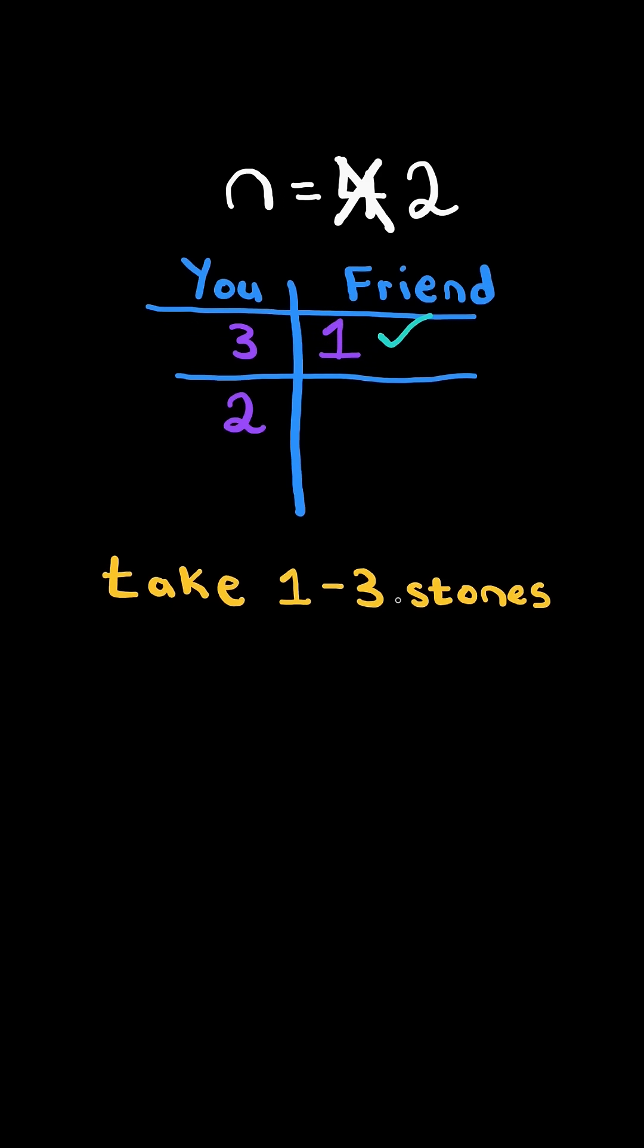Another possibility is that you took 2 stones, but then your friend can take the remaining 2 and win. And the last possibility, you could have taken 1, but your friend picks 3 and wins.